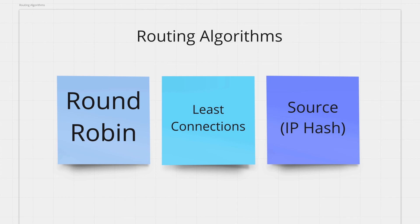The last algorithm we'll look at is called the source algorithm. The load balancer hashes the IP address of the incoming request to find which server to forward the request to. The hash is deterministic, so every time you have the same IP address, you'll get the same server. This makes sure that a given IP is always routed to the same backend server, which comes with a bunch of benefits. As you can see, you can have a load balancer running with some pretty straightforward routing algorithms and it will do wonders for you.